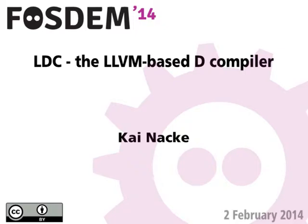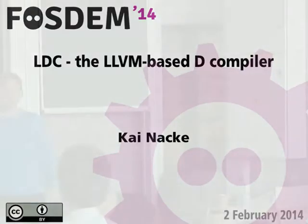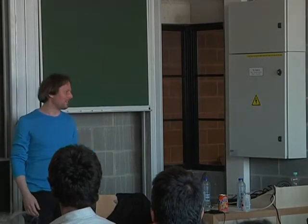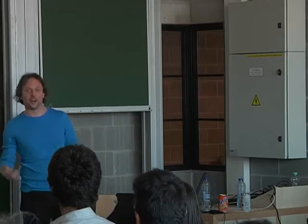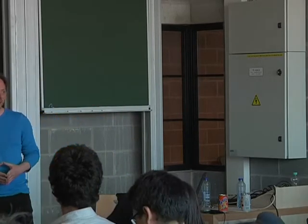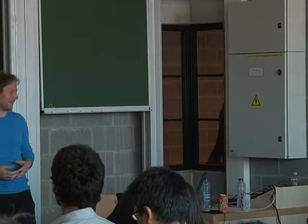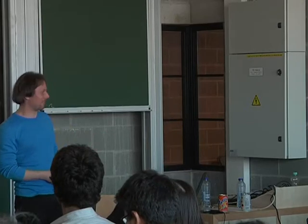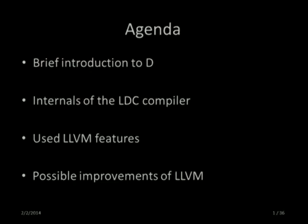I'm the current main developer of the LDC D-compiler. I'd like to present what D is, how the D-compiler internals are working, how we use LLVM, and in the end, I'd like to give some thoughts about improvements. Regarding the talk about Ruby, there are some points that are really different and some other points where it's the same experience, so I'm glad to have the Ruby talk before mine.